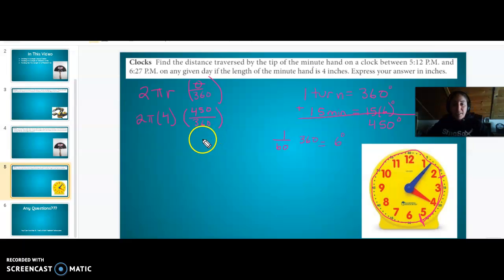450 over 360. We're going to use our handy-dandy calculator. So what are we trying to figure out? Distance. The distance our minute hand went is 2π times 4 times 450 divided by 360. So this is 31.41, and we want it to the nearest inch. So 8π times 450 over 360 is 31 inches.